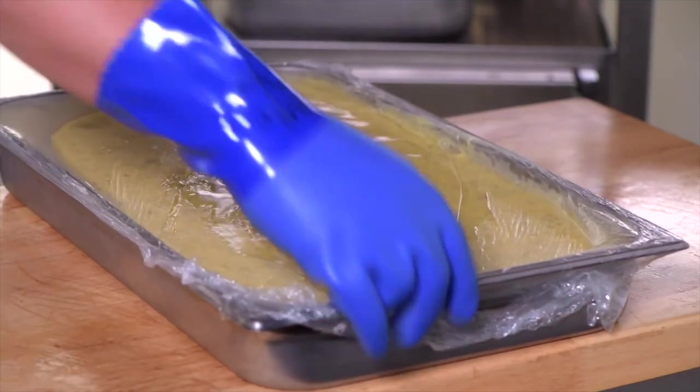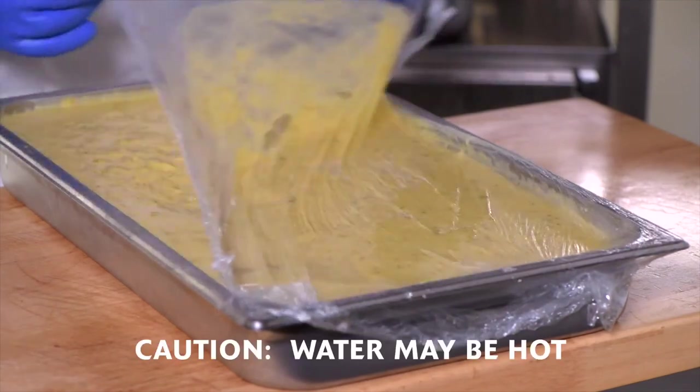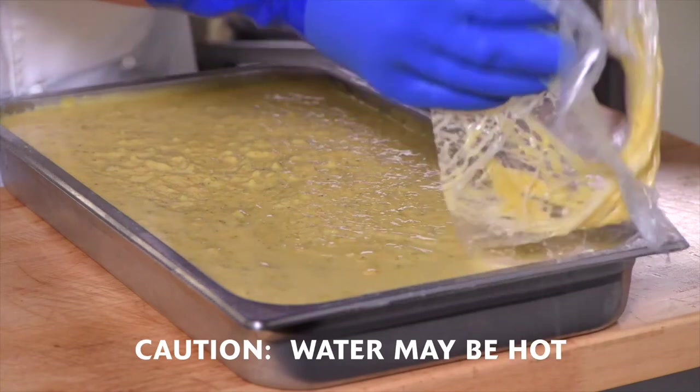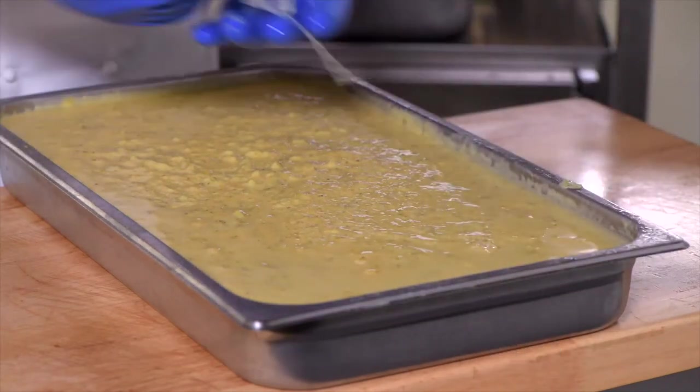While most foods do not need to be wrapped in your Evolution steamer, if you are using film wrap, use caution when removing from the steamer, as pools of hot water will form on top of the wrap. This water can cause burns.